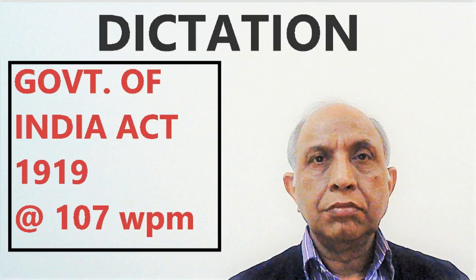The diarchy was for the provincial governments. The provincial subjects were divided into two categories: reserved and transferred. The reserved subjects were kept with the governor, and transferred subjects were kept with the governor acting with the Indian ministers. Diarchy was a gradual transition from irresponsible to responsible government. The provinces were thought to be suitable for experimenting with such a scheme. Thus, the provincial subjects were divided into reserved and transferred subjects.